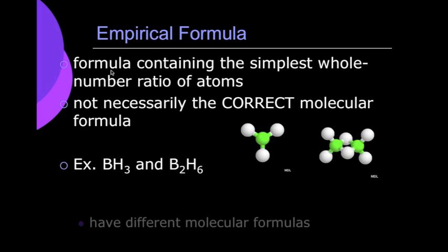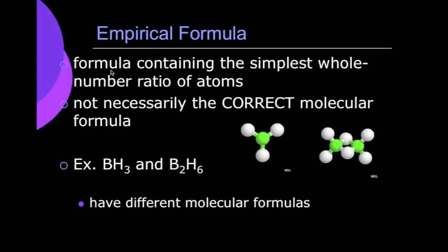And what we see is that we can have different molecular formulas, meaning we can have different variations of the same empirical formula. So we see that on boron trihydride, we have a one to three ratio between boron and hydrogen. And we can have any multiple of that. We see with diboron hexahydride, we can have any variation of that one to three ratio.